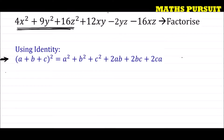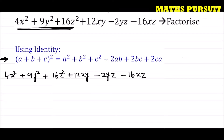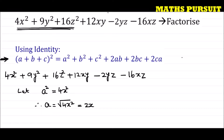The given expression is 4x² + 9y² + 16z² + 12xy − 24yz − 16xz. Let us assign: let a² = 4x². Therefore a = √(4x²), which equals ±2x. We will come back to the sign choice shortly.